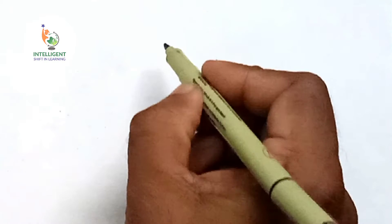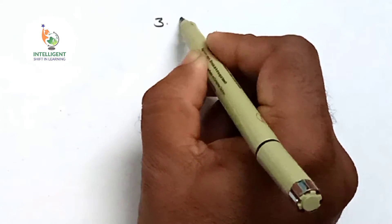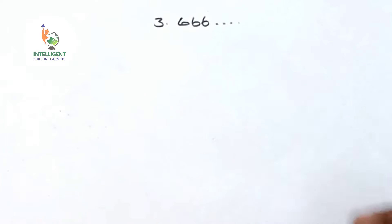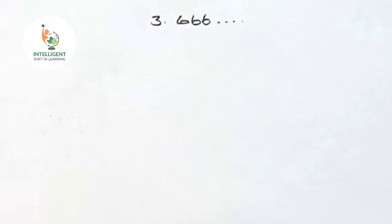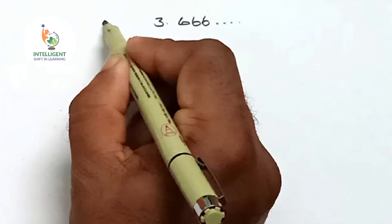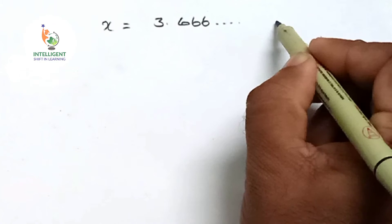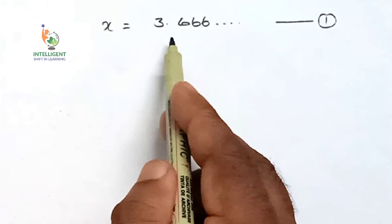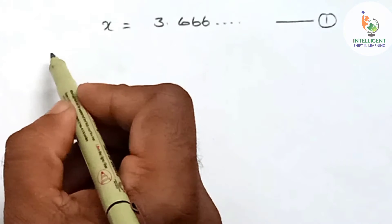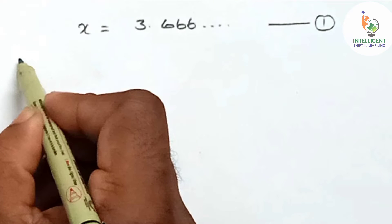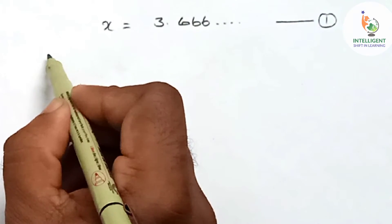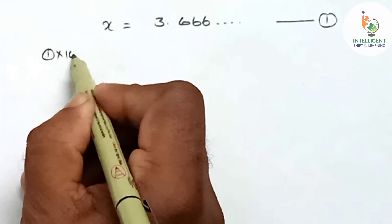Another example: express 3.666... in rational form. We will consider x is equal to 3.666... — consider this as equation number one. Here also, we can observe only the digit 6 is repeating. Since only one digit is repeating, we will multiply both LHS and RHS by 10.